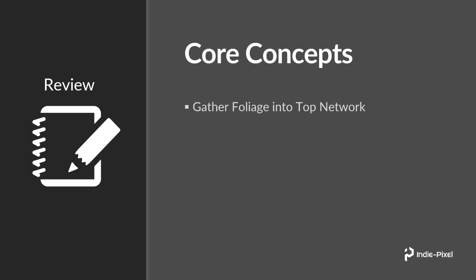We're going to learn how to utilize a bunch of file pattern nodes so that we can gather different types of foliage from our Unity project. These are going to be prefabs that we want to get a path to, and we want to get that path because we want to write it to a CSV file.